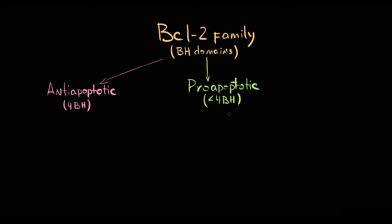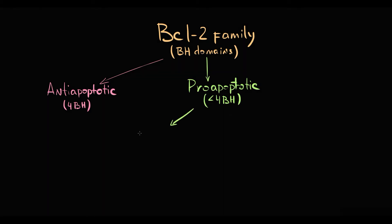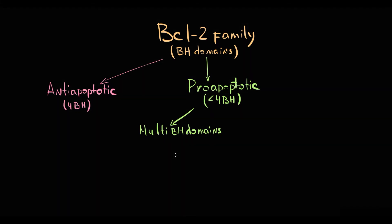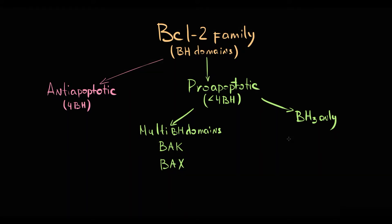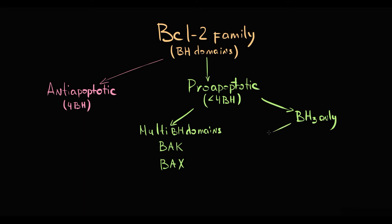According to that principle, pro-apoptotic proteins are divided into multi-BH domain pro-apoptotic proteins that have 3 BH domains — these are BAX and BAK proteins. The second, much larger group of pro-apoptotic proteins all have only one BH domain; because of that, this group is called BH3-only proteins. This group is divided into activators and sensitizers, and BIM protein belongs to the activators group.